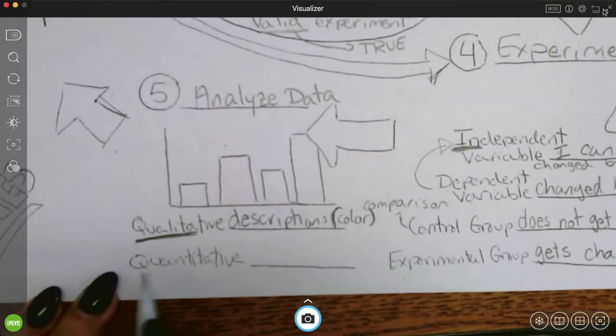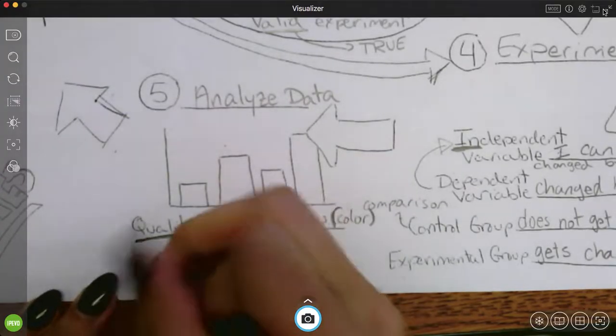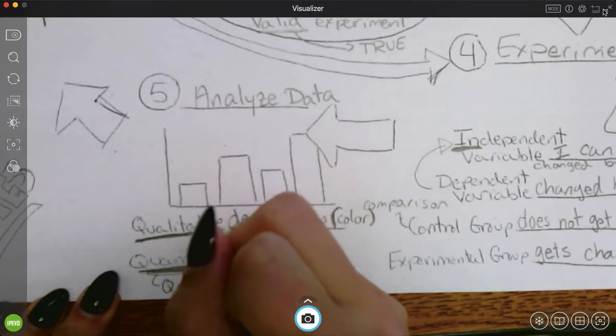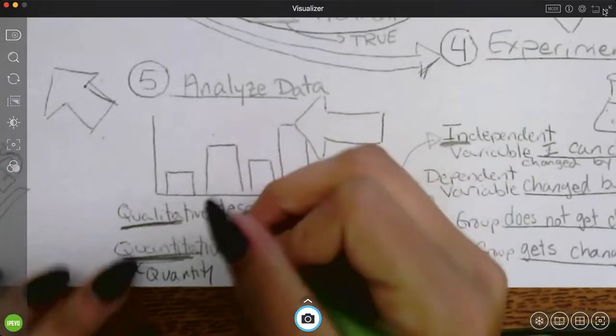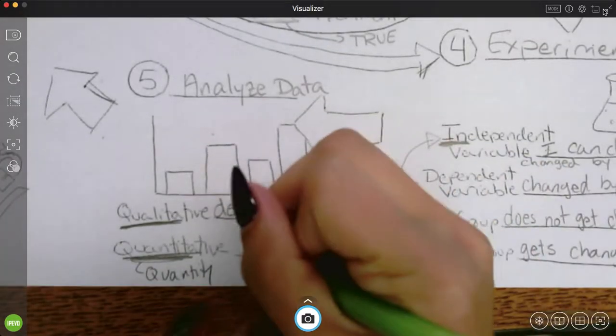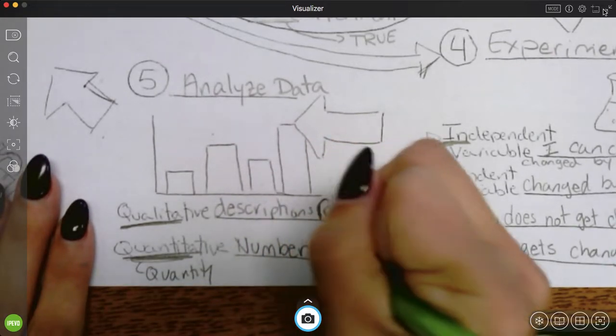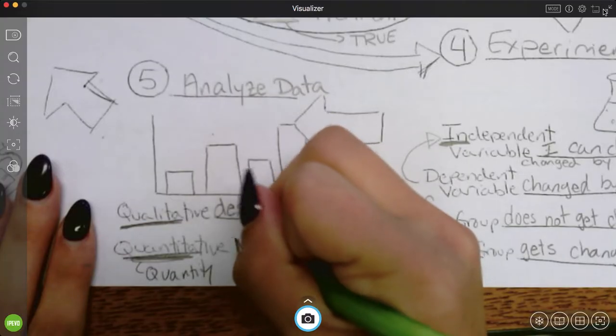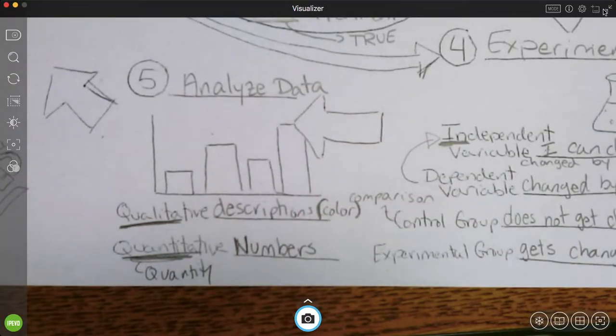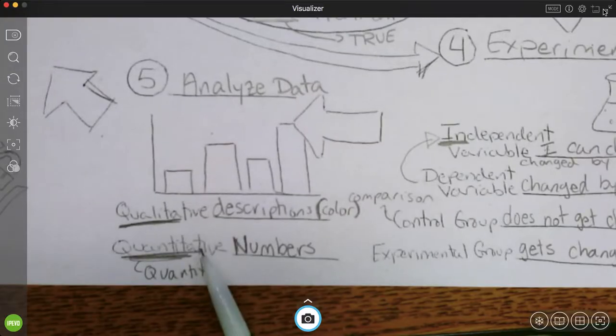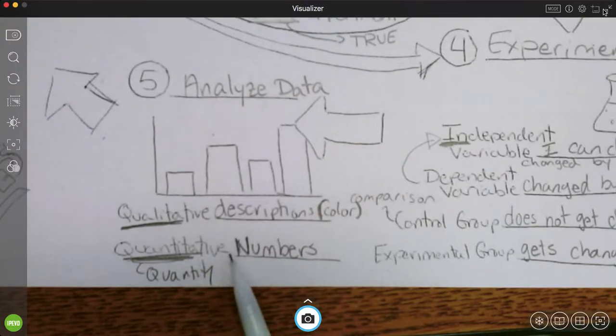Quantitative. This word right here sounds like quantity. These are numbers, which is a lot easier to see. So in my experiment with my test, my test score was my dependent variable. That's a quantitative piece of data. Those are numbers.